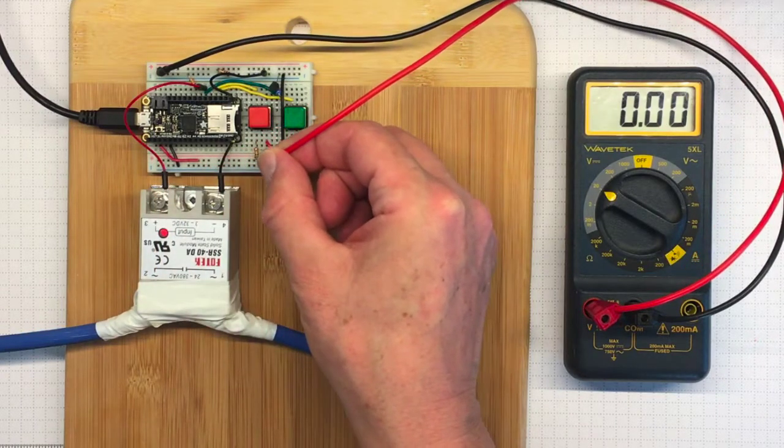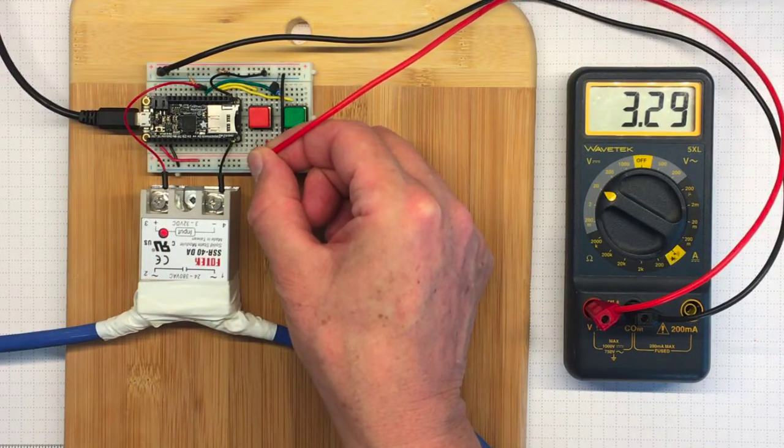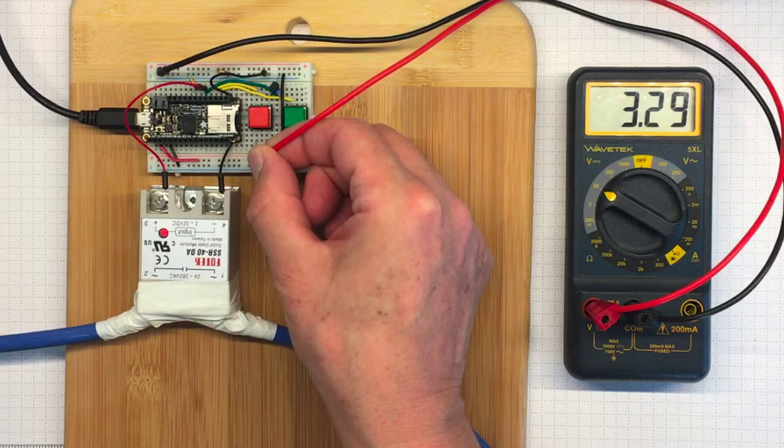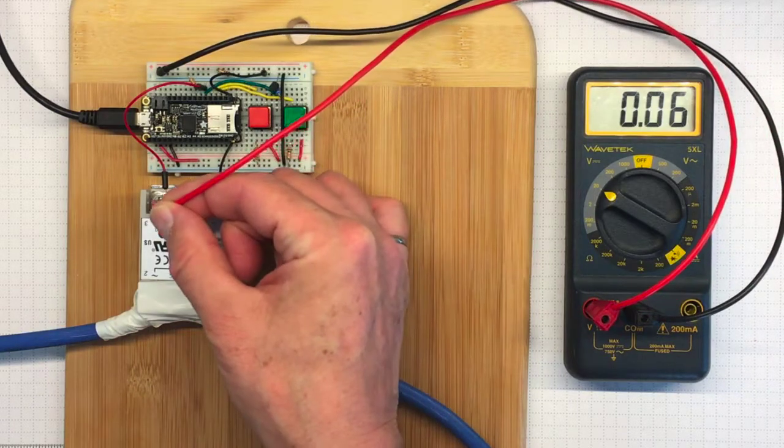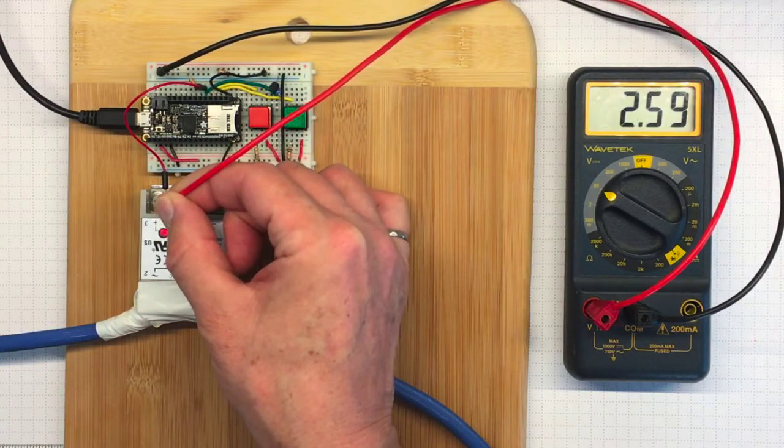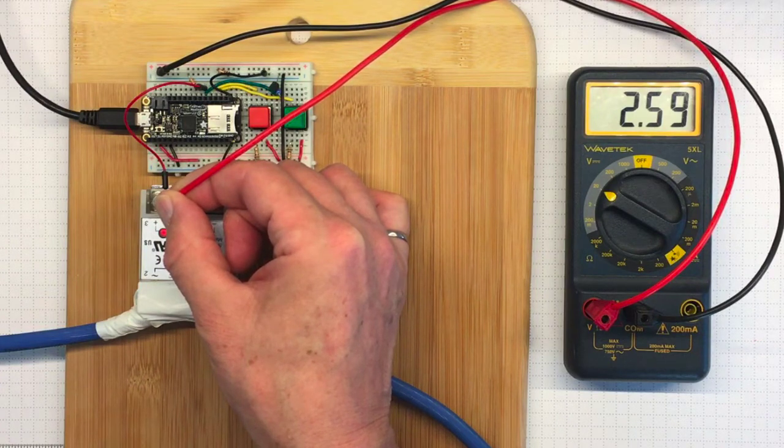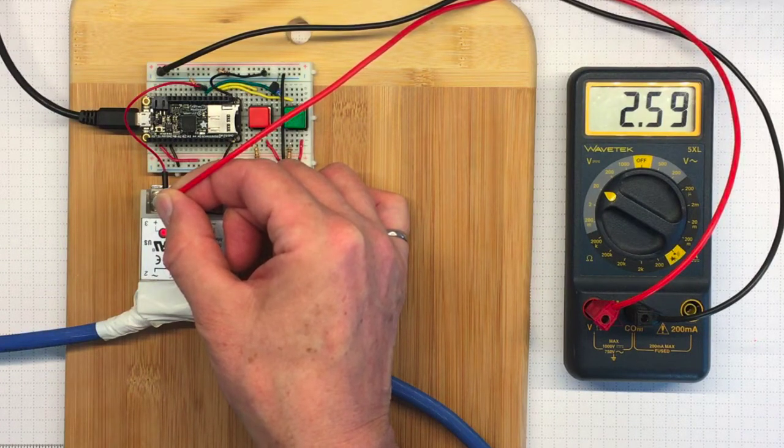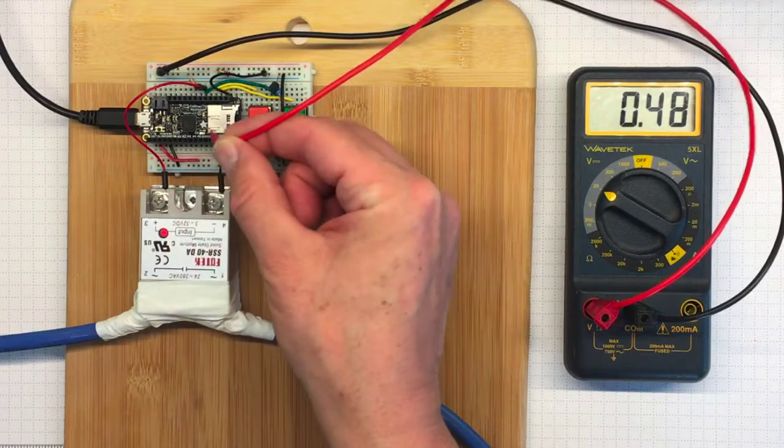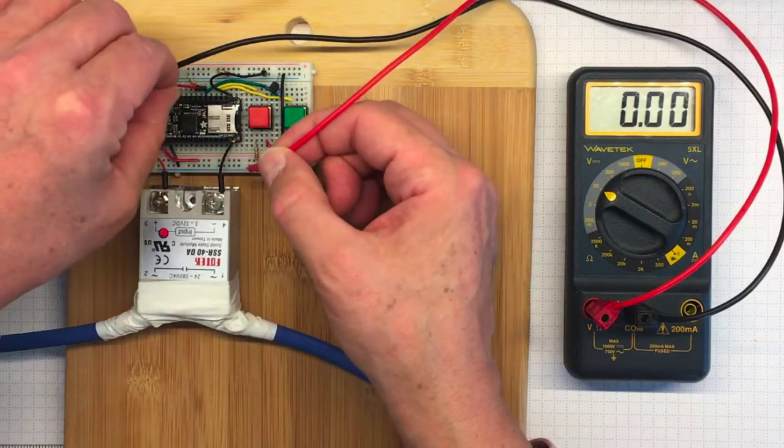But this is a 3.3 volt power supply. If the voltage is dropping that much below what it should be, it should be 3 volts, then maybe I'm drawing more current than this device can supply.